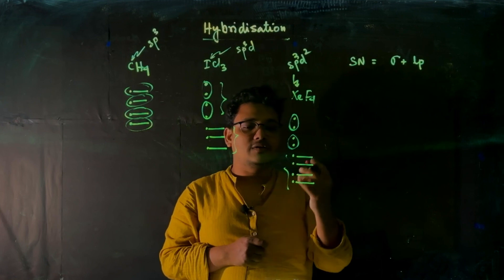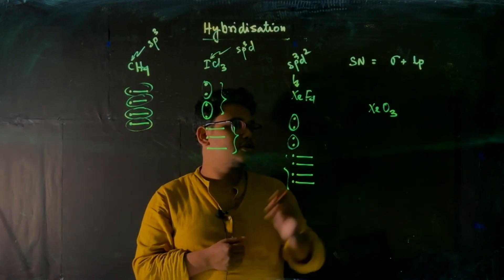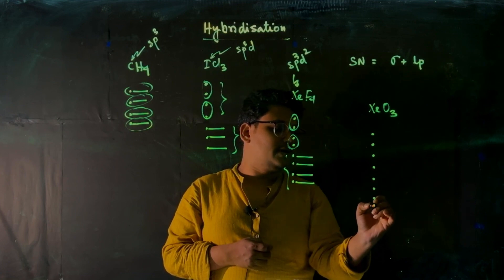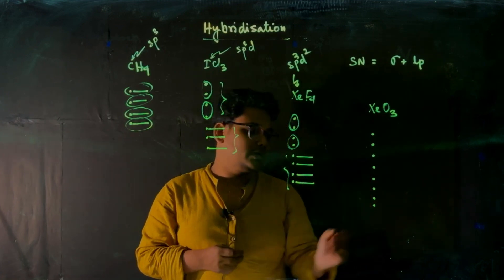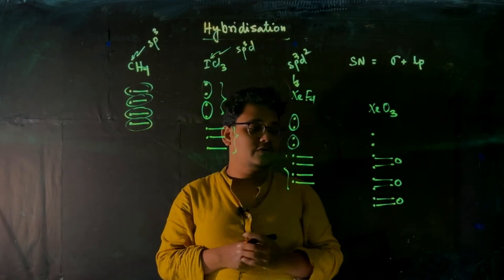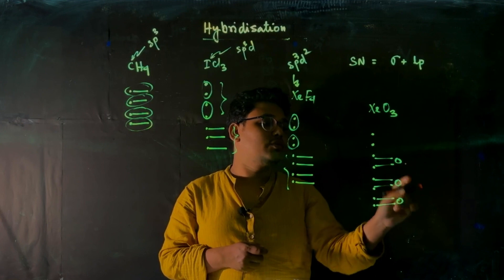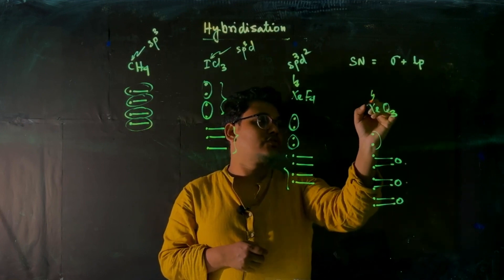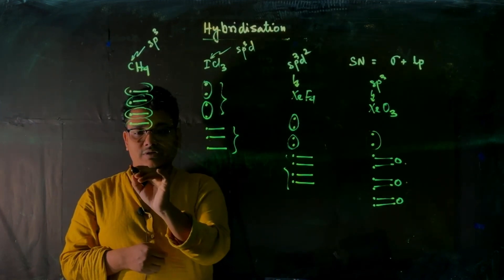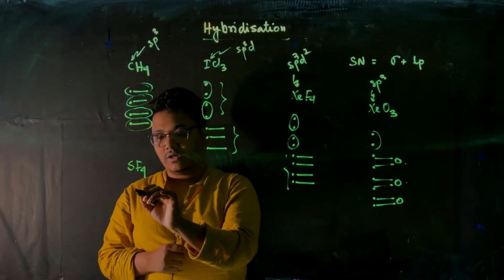Now consider examples where divalent atoms are present. For XeO₃, xenon has eight valence electrons. Oxygen will form double bonds — three double bonds in total. Out of each double bond, one is sigma and one is pi. So we have three sigma bonds and one lone pair, giving a steric number of four, and the hybridization will be sp³.